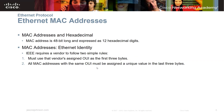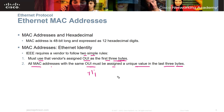The MAC address, or media access control address, is written in hexadecimal. It's 48 bits long and expressed as 12 hexadecimal digits. The IEEE requires vendors to follow two simple rules: the vendor must use the assigned OUI as the first three bytes. You can look up the first three bytes on the internet to find out which vendor made that NIC card or device. The last three bytes are assigned uniquely by the vendor, so all MAC addresses with the same OUI must have a unique value in the last three bytes.